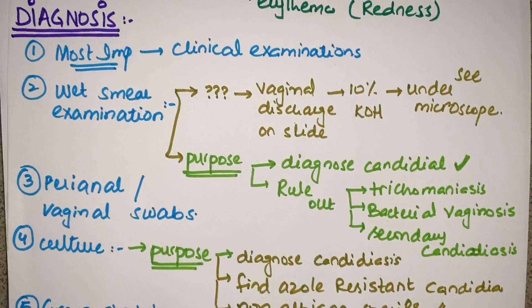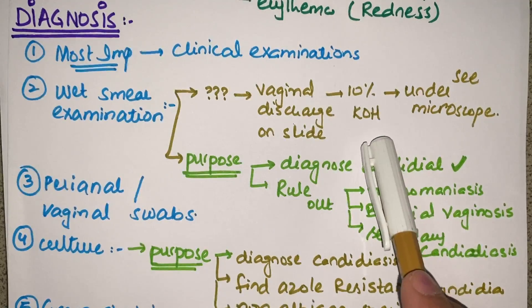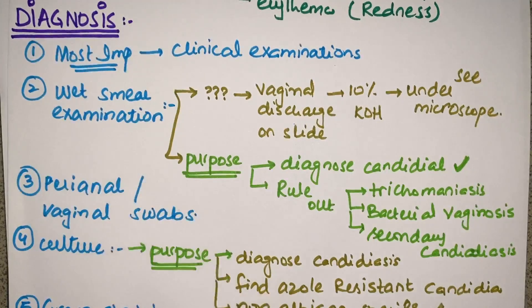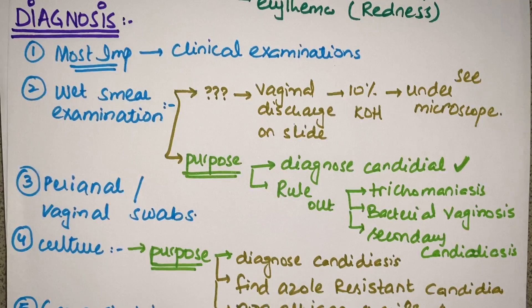For diagnosis, the most important method is clinical — based on the signs and symptoms discussed. Otherwise, wet smear examination can be done: take the discharge from the female via a swab, put it on a slide, add 10% KOH, and see it under the microscope. The purpose is to diagnose candidal infection and also to rule out whether the scenario is due to trichomoniasis, bacterial vaginosis, or secondary candidiasis.